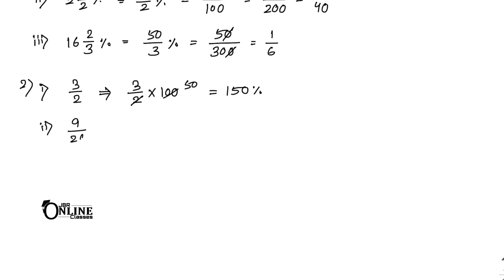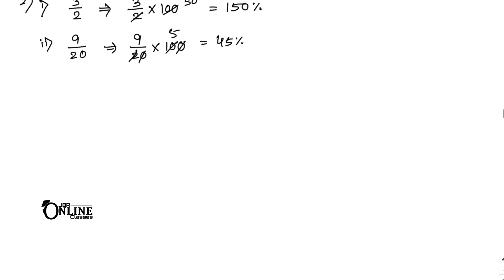9 by 20 into 100 gives 45 percent. The last one: 1 whole 1 by 4 — multiply by 100 and you will get your answer. Now number three: express the following fractions as decimals, then express the decimal as a percentage.